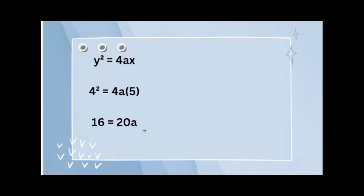To cancel out 20, we divide both sides by 20. So 16 divided by 20 is equal to 0.8, and the only value left is A. So A is equal to 0.8. Therefore, the location of the light source should be placed at a distance of 0.8 cm.